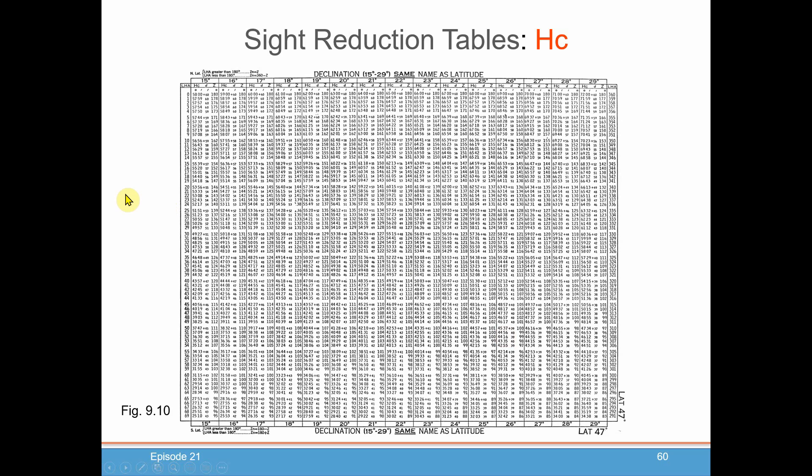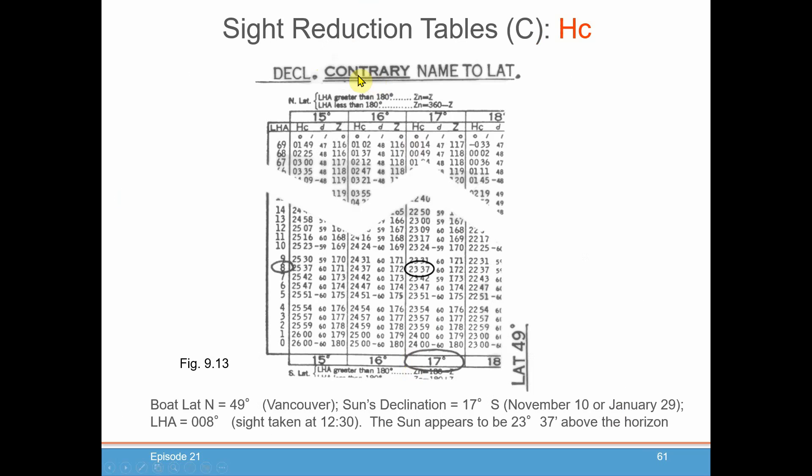So we'll take a look at our sight reduction tables, 249. You can see that you have to know which section to go to for declination and latitude of where you are and whether you are in the same hemisphere of the boat and your celestial object or contrary to the north or south hemisphere. Here's an example of using the sight reduction tables to pull out HC.